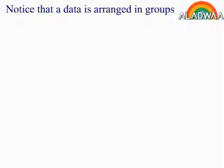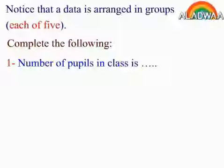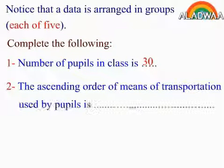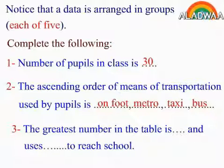Notice that the data is arranged in groups, each of five. Complete the following: 1. The number of pupils in the class is 30. 2. The ascending order of means of transportation used by pupils is on foot, metro, taxi, and then bus. 3. The greatest number in the table is 9, and uses the bus to reach school.